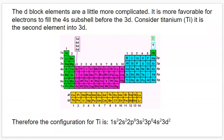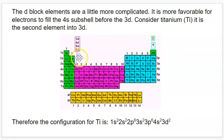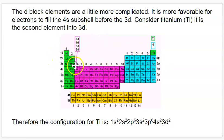Let's try a trickier one — titanium. This is going to force us to consider that these D subshells are one energy level less. We're going to end in a D subshell that's going to be in the third level, but there's going to be a four S before it. As long as we remember that all of the D subshells are one energy level less, we can still read left to right, top to bottom. So titanium is: 1S2, 2S2, 2P6, 3S2, 3P6, 4S2, and then 3D2.